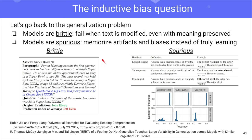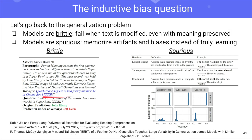Brittleness means that if we change a little bit the input, we see weird behavior. This was very visible in the Jia and Liang paper on SQuAD. They show that if you add a random sentence at the end of a SQuAD context, the answer that the model predicts for the question is totally different. The model is just lost because with this very small modification we've left the training domain.